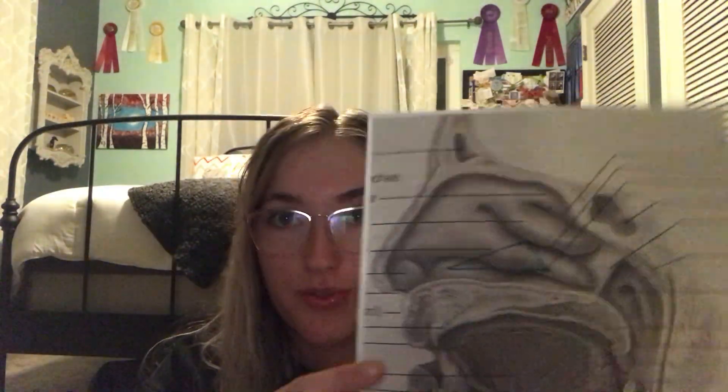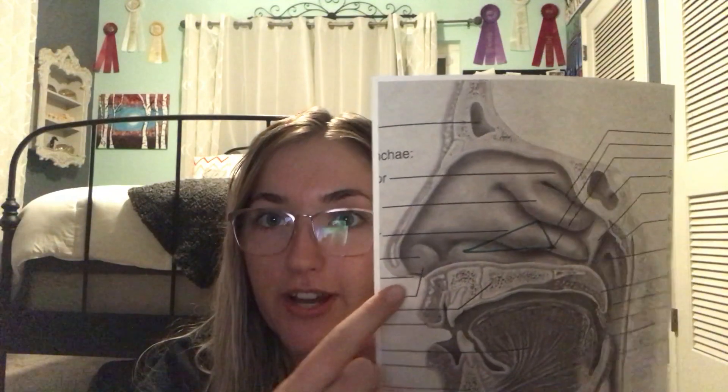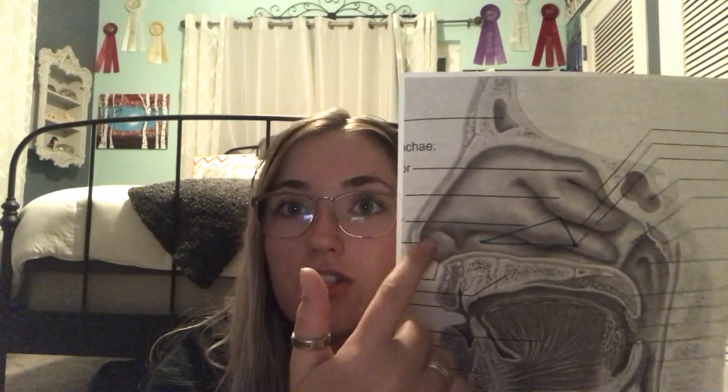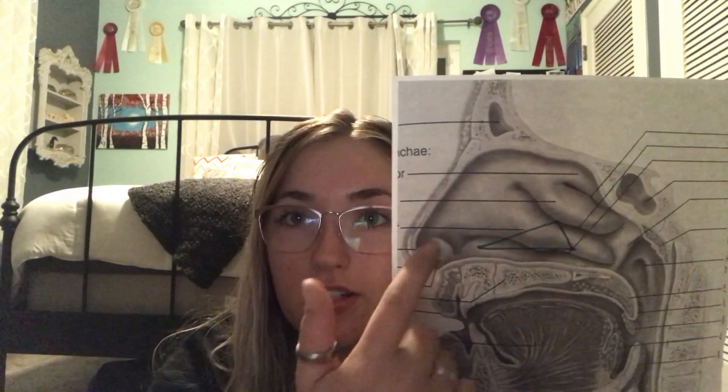The respiratory system. So if a dust particle were to enter through the anterior nares, which is basically the nostril, then this little circular thing here is the vestibule.